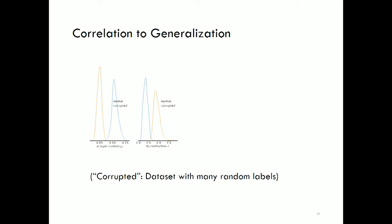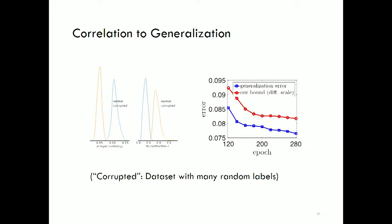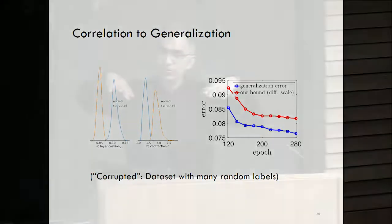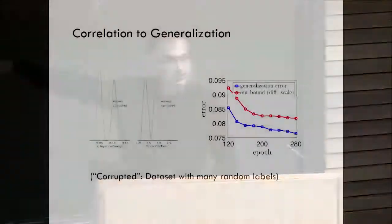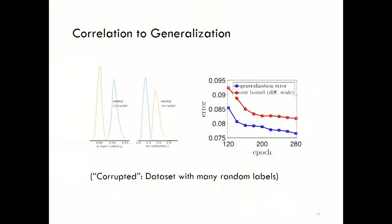Correlation to generalization: we ran experiments by corrupting the training data — say, corrupting 50% of the data — and seeing how these parameters shift. With corrupted data, clearly the training won't generalize as well, and you see the effect on these measurable parameters. Also, when you train neural nets, at some point the training error drops to zero but generalization error keeps improving. Indeed, you see that our bound improves past the stage when the test error has gone down, so there's some empirical verification of the theory.